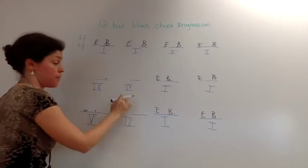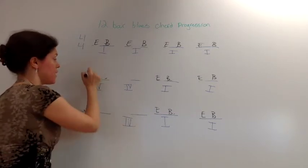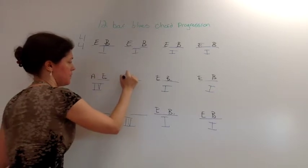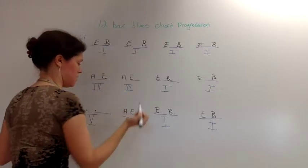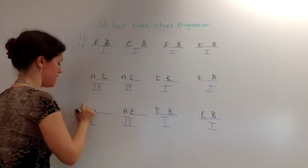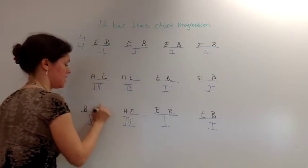Now, every time you have a 4, you're going to do A and E. And you're going to do A and E. On your 5, it's B and F sharp.